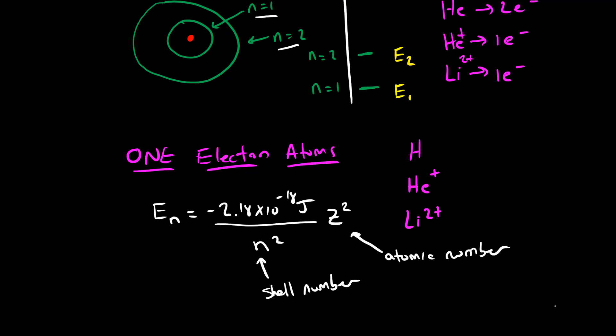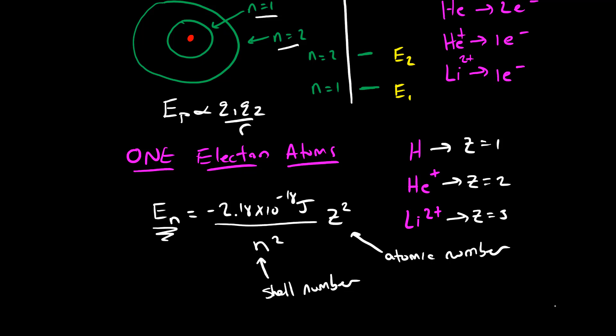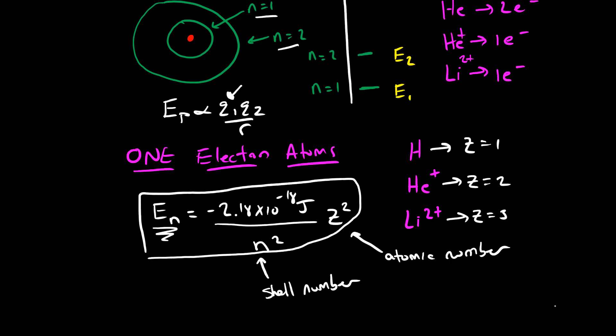So if we're dealing with a hydrogen atom, z equals one; a helium plus-one cation, z equals two; a lithium plus-two cation, z equals three. The energy of any given level is weighted by how many protons are in the nucleus. This should make sense based on our understanding of Coulomb's law — q1 is the charge in the nucleus, the total number of protons. The more protons there are, the more positive charge in the nucleus, so the more the electron will be attracted to it because of a stronger attractive force. This is our really important equation — it allows us to calculate the energy of any level for a single-electron atom.